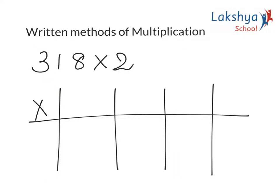Let's learn multiplication using the grid method. Here the number is 318 × 2, which is a single digit. So let me split. 318 has 310 and 8 × 2. I write it over here.